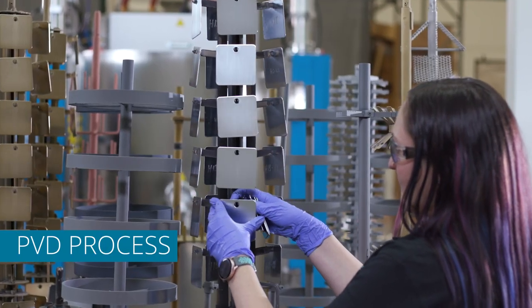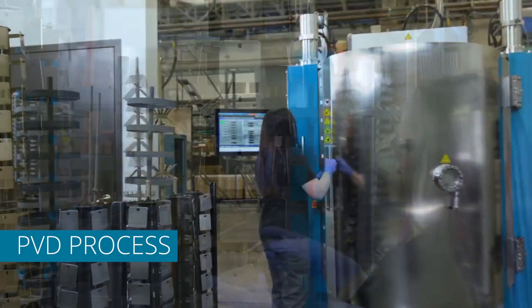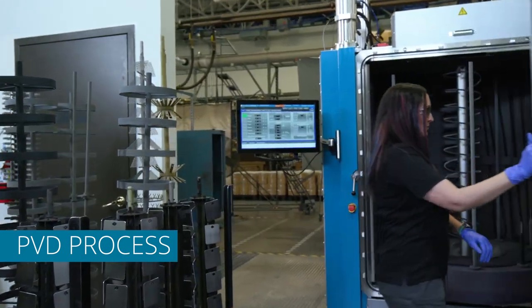To begin the process, the VT1500i system operator places parts on the PVD racks and loads them into the vacuum chamber.